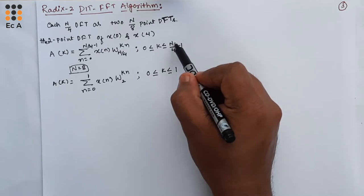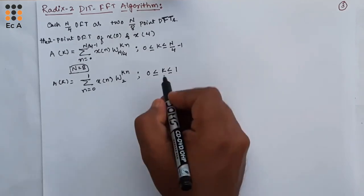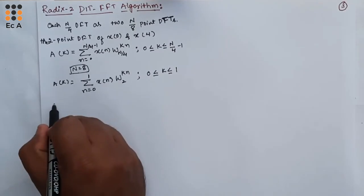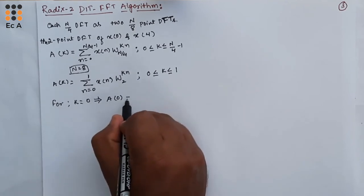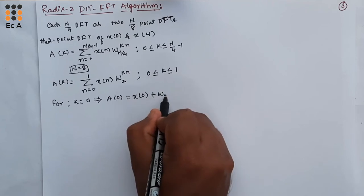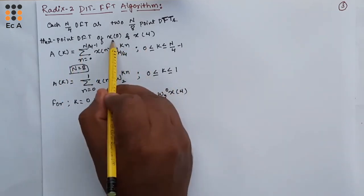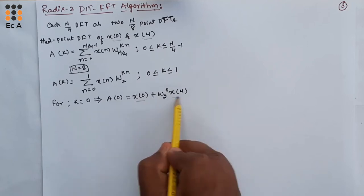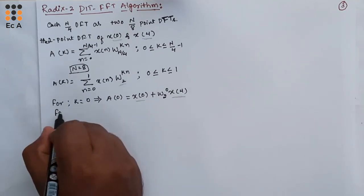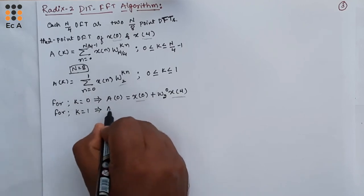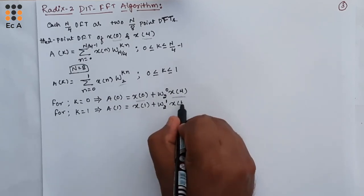Again, if N equals 8, then N/4 equals 2 and N/4 minus 1 equals 1, so k ranges from 0 to 1. For k equal to 0: a(0) equals x(0) plus W_2^0 times x(4). For k equal to 1: a(1) equals x(0) plus W_2^1 times x(4), since we are considering only two terms x(0) and x(4).